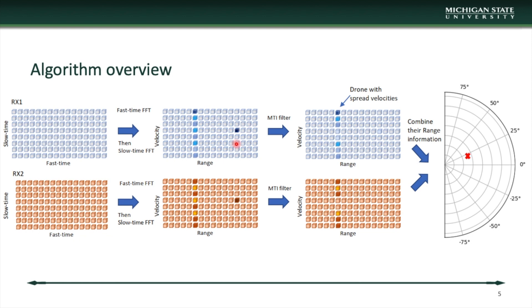However, the problem is that this strong response from the surrounding clutter can be very strong compared to the drone. For that, we'll be using a moving target indication filter. We're going to filter out all these responses close to velocity equals zero. Only the drone responses will remain that will be spread out in the velocity axis. If the mean squared value of this velocity profile is above a threshold, we'll consider the response as a drone and by comparing the range information in these two receivers, we will be able to localize the drone.